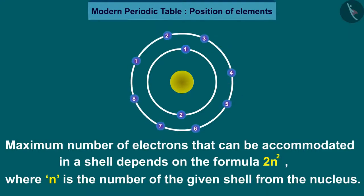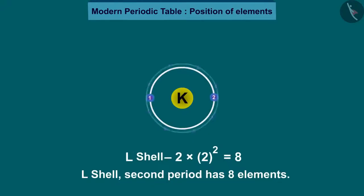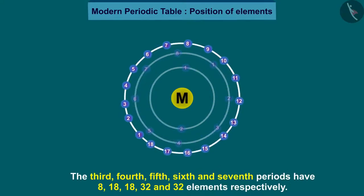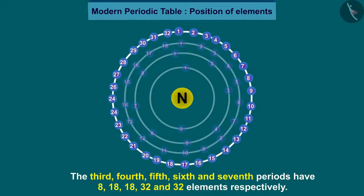For example, K shell, the first period has two elements. L shell, the second period has eight elements. The third, fourth, fifth, sixth and seventh periods have eight, eighteen, eighteen, thirty-two and thirty-two elements respectively. The reason for this you will study in higher classes.